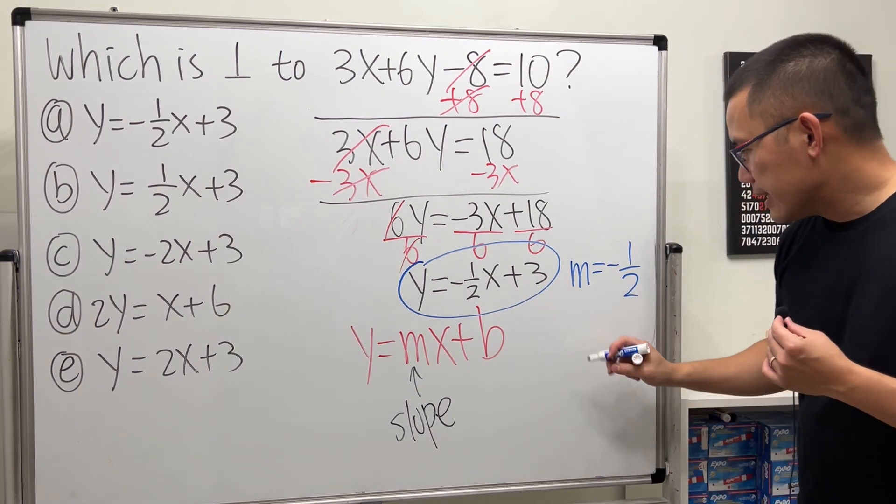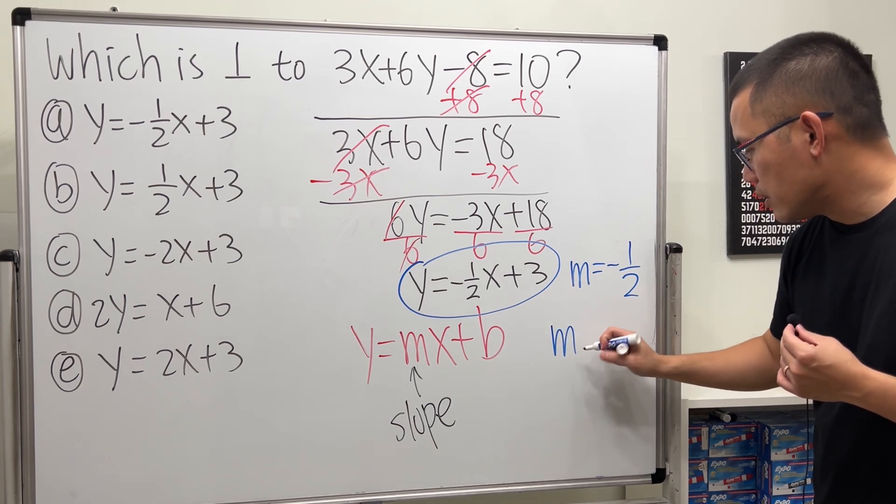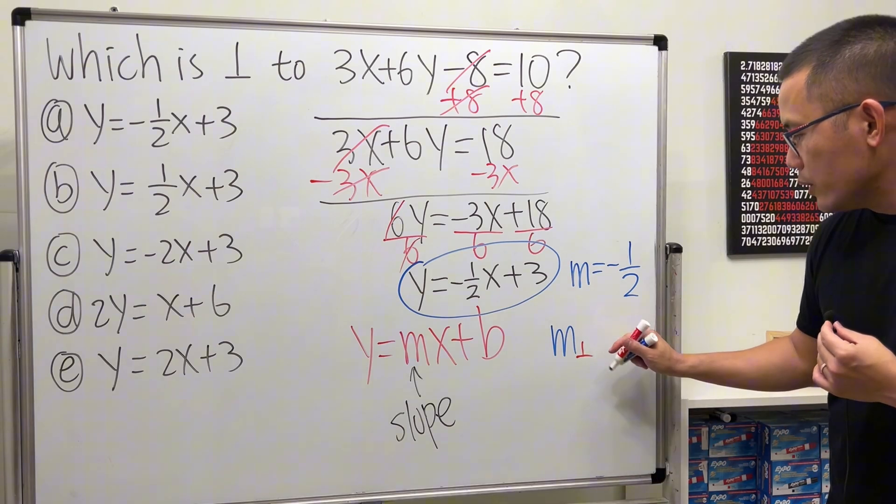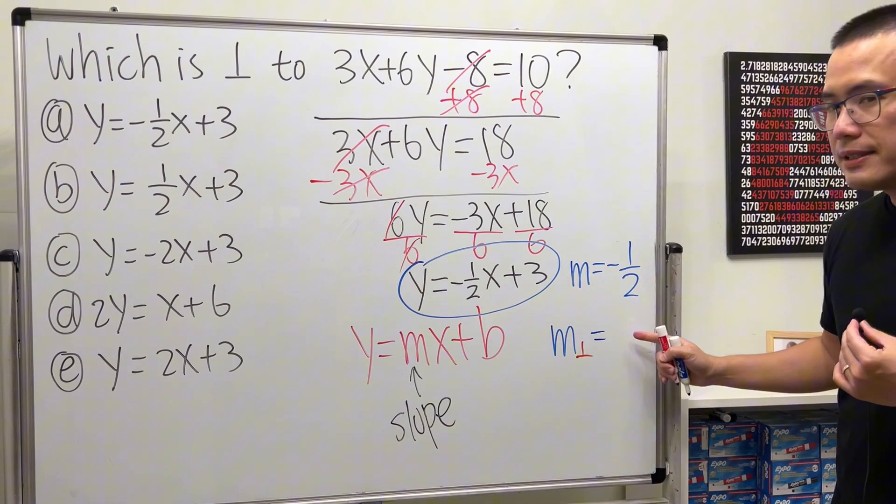Now, let's get the perpendicular slope. This is what I mean by the perpendicular slope. What you want to do is do the opposite sign.